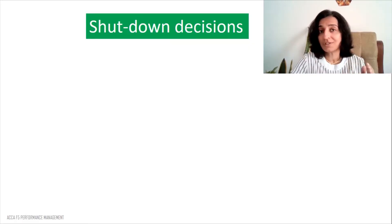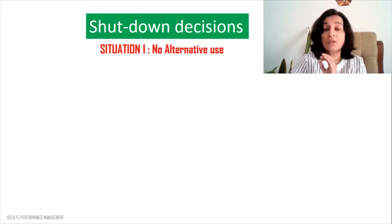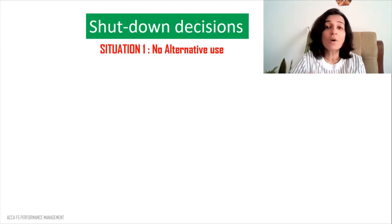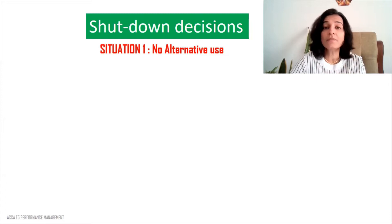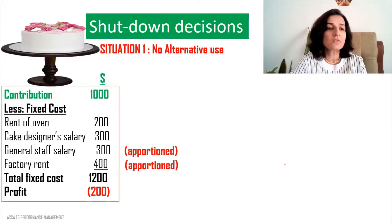The first situation that can come in a shutdown position problem is where there is no alternative use. Assume that you are running a company where one of the products manufactured is designer cakes. The profit and loss account is also provided.